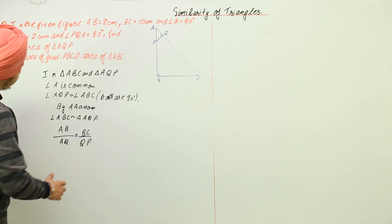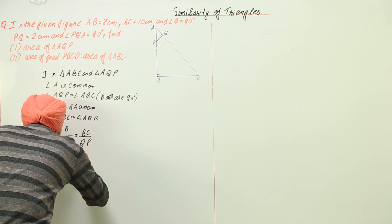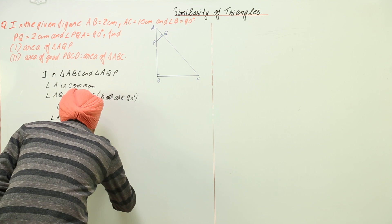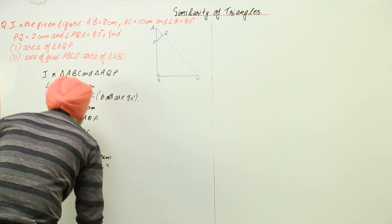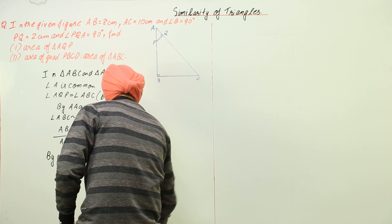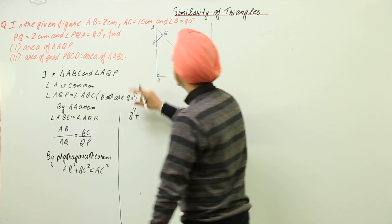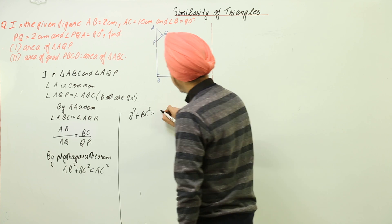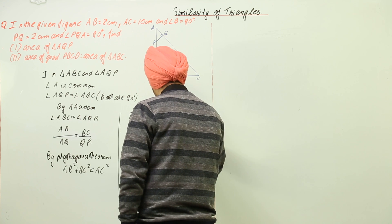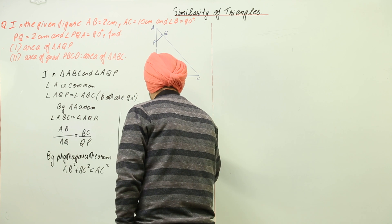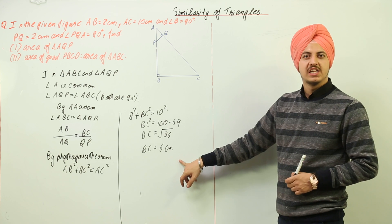First, we find BC using the Pythagoras theorem: AB² + BC² = AC². So 8² + BC² = 10², giving BC² = 100 − 64 = 36, therefore BC = √36 = 6 centimeters.